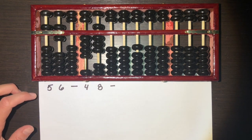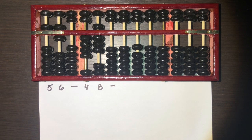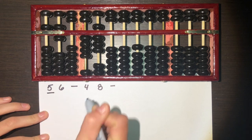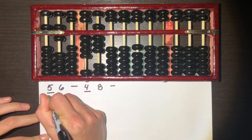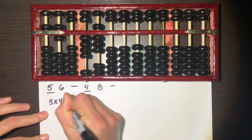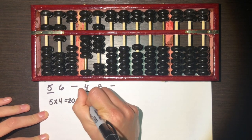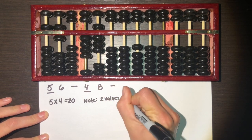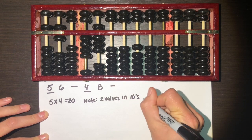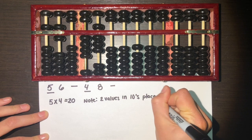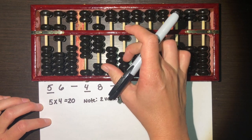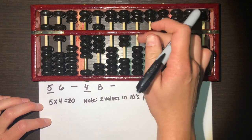We're going to leave another blank spot to keep things clear. To start this process, we look at the tens digit of each of our original numbers and multiply them together: five times four equals 20. Note that we have two values in the tens digit of that result. So we go to our blank spot, start one over from that, and set 20 — that's two tens and zero ones.